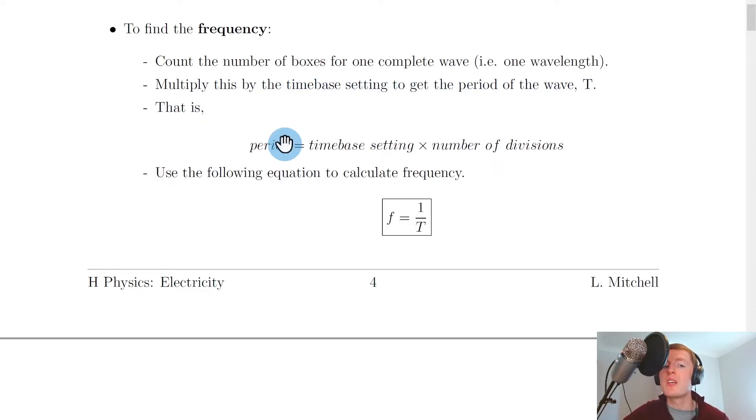Then multiply this by the time-base setting to get the period of the wave, T. That is, period equals time-base setting times the number of divisions for one complete wave horizontally. Once we know the period, we can use the equation from the Nat5 waves topic, f equals 1 over T, to calculate the frequency.